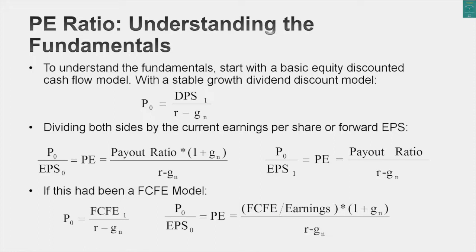There are three variables that drive the P/E ratio for a stable growth dividend-paying company. The first is the payout ratio — the percentage of earnings you pay out as dividends. The second is the cost of equity, reflective of the risk of the stock. And the third is the expected growth rate. P/E ratios are determined by payout ratios, cost of equity, and expected growth rate.